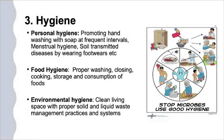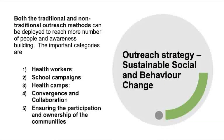The most important part of this session is sustaining social and behavioral changes through different measures. Awareness is most important and can be achieved through several strategies: using traditional and non-traditional media to reach more people and build awareness; targeting health workers and conducting school campaigns to reach students; organizing health camps at the village level for wider awareness creation; and ensuring convergence and collaboration with different departments to promote infrastructure at the rural level, while ensuring community participation and ownership in managing WASH infrastructure and practices.